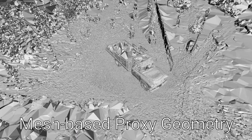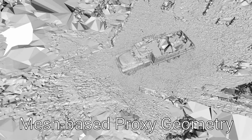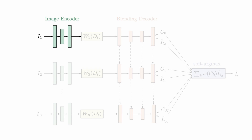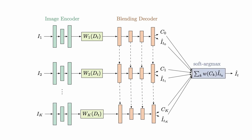This proxy geometry assists the mapping of image features from input views to new target views. The processing of image features in the target view is performed by a recurrent network that integrates information from multiple source images. Each source image is first encoded using a convolutional network. The encoded features are then mapped to the target view using the proxy geometry. The mapped features are decoded by another convolutional network that produces estimated colors and confidence values in the target view.